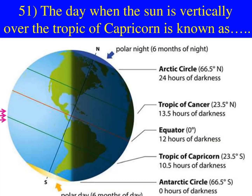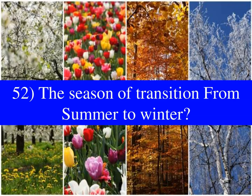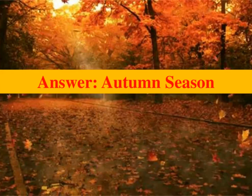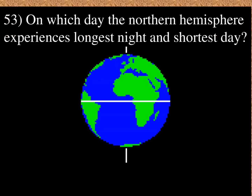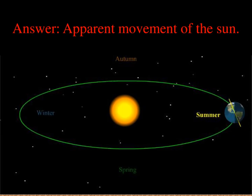The day when the Sun is vertically over the Tropic of Capricorn is known as Winter Solstice. The season of transition from Summer to Winter is Autumn season. On which day does the Northern Hemisphere experience the longest night and shortest day? Answer: December 22nd. Due to the apparent movement of the Sun, the different seasons are repeated in a cyclic manner.